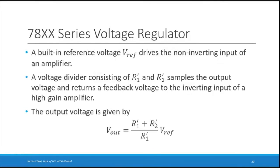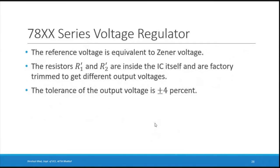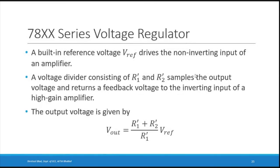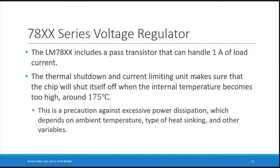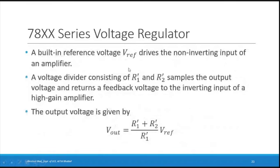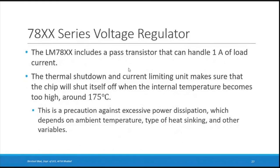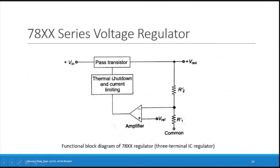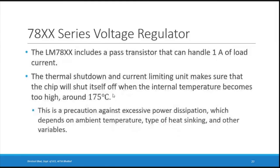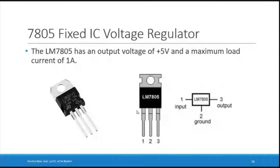The reference voltage is equivalent to the zener voltage — a constant. The pass transistor can handle 1 ampere of load current. There is a thermal shutdown and current limiting unit that automatically turns off the circuit if the internal temperature becomes too high, around 175°C — a precaution against excessive power dissipation.